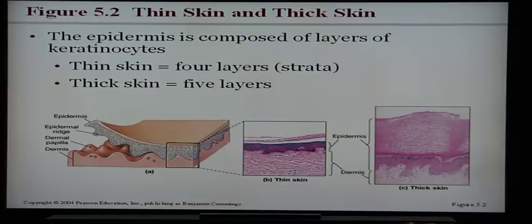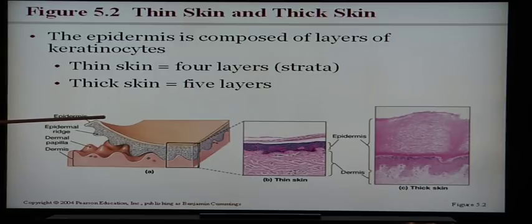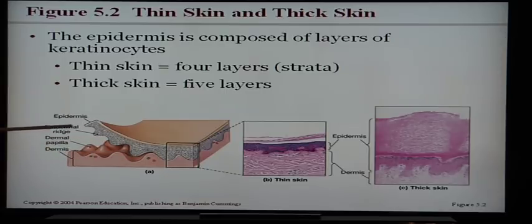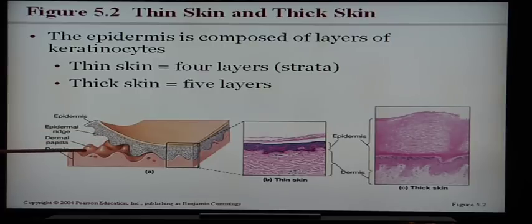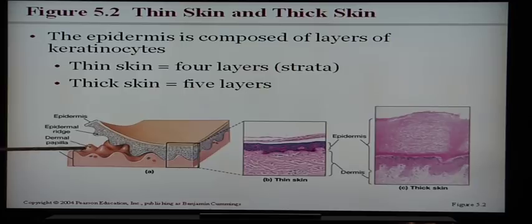This picture shows the epidermis and dermis, with the epidermis pulled back slightly. The bottom part of the epidermis has wavy ridges called epidermal ridges, and the dermis has corresponding wavy ridges called the dermal papilla — 'papilla' meaning nipple-shaped. The epidermal ridges fit into the dermal papilla like puzzle pieces or a lock and key, with opposite patterns fitting together perfectly.